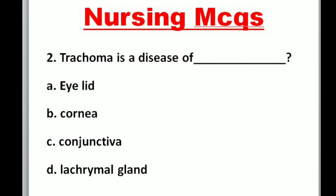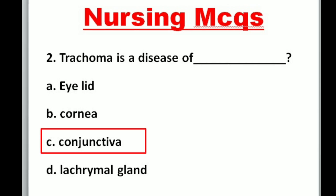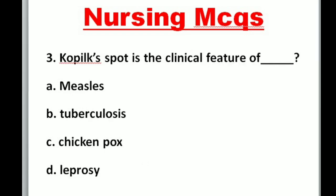Question 2: Trachoma is a disease of — A. Eyelid, B. Cornea, C. Conjunctiva, D. Lacrimal Gland. Correct option is C: Conjunctiva.